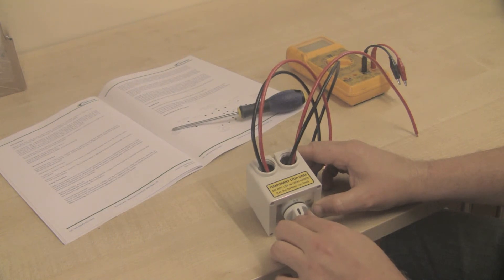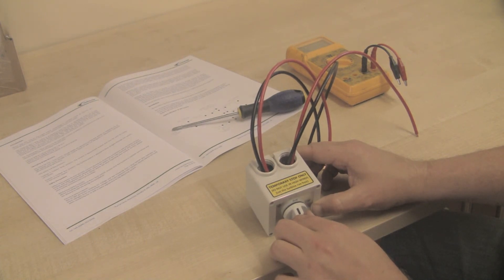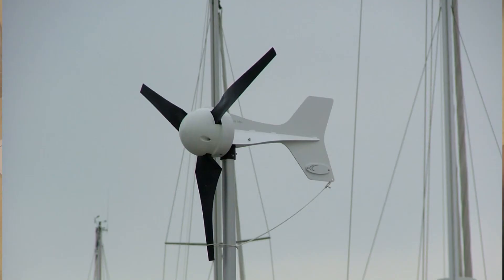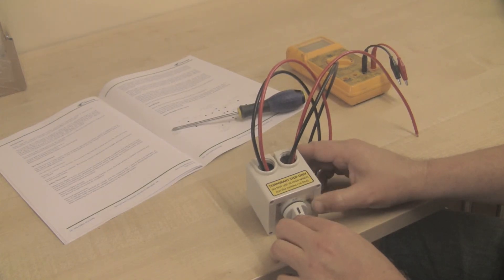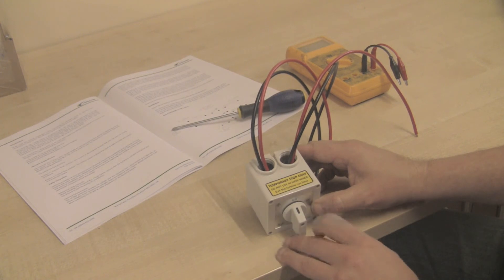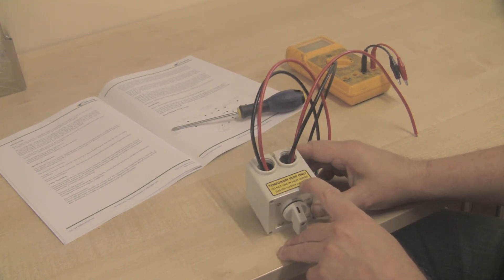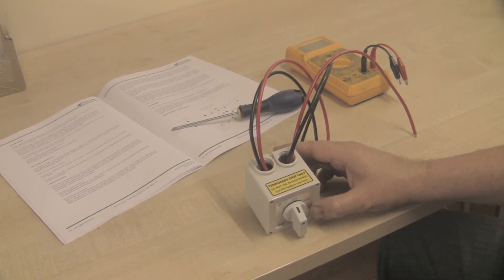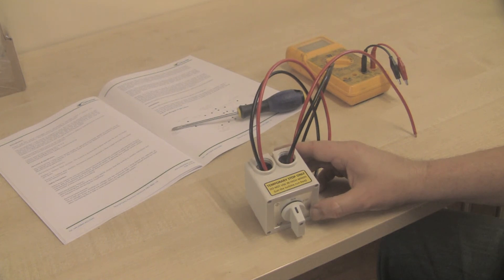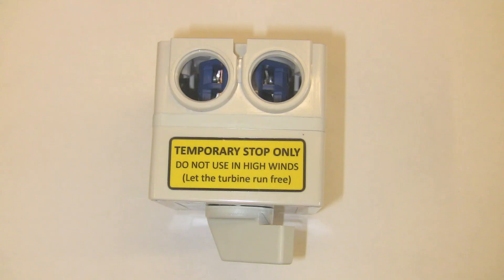During high winds, the best thing to do is to tether the wind turbine. But if you haven't done that, it's best to let the turbine run free and produce the power. If we have the turbine in the stop position during high winds, and the wind overcomes the electromagnetic brake, the stator will burn out. So please only use the run-stop switch for maintenance purposes only.